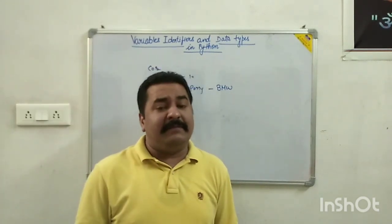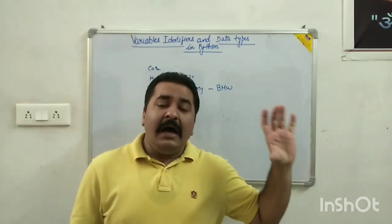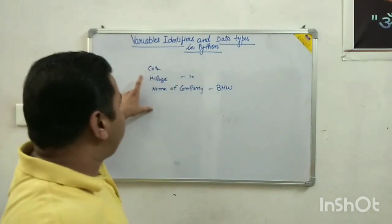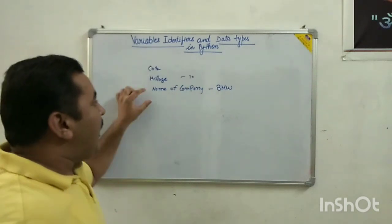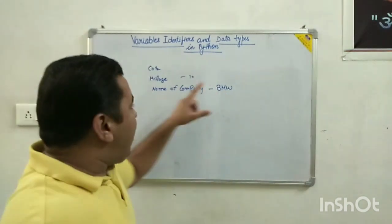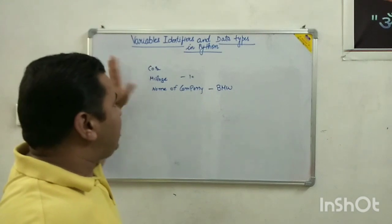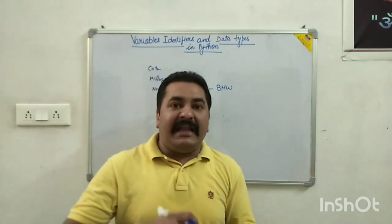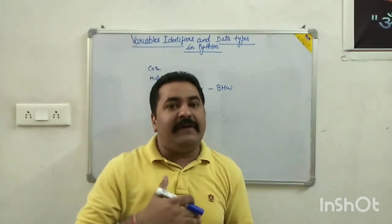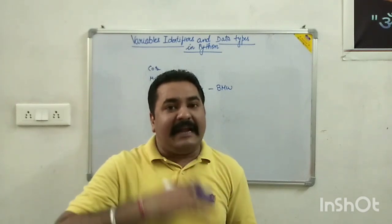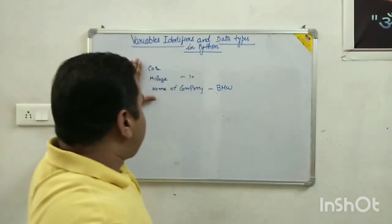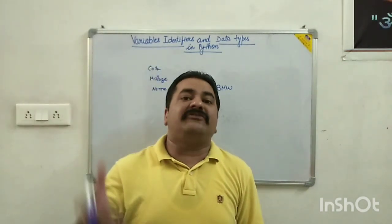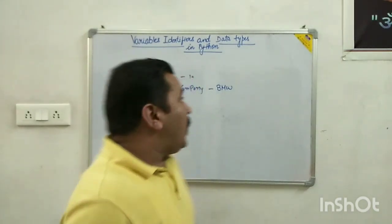We can update the variable or change its value because the variable is not a constant thing — its value can change. For example, if this car has a mileage of 10 and the company name is BMW, but if we use some other car with a different mileage, the value varies and can be assigned a new value. So each variable can hold different values.